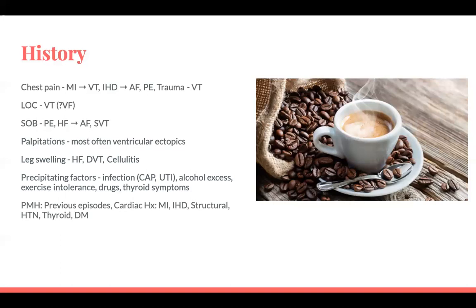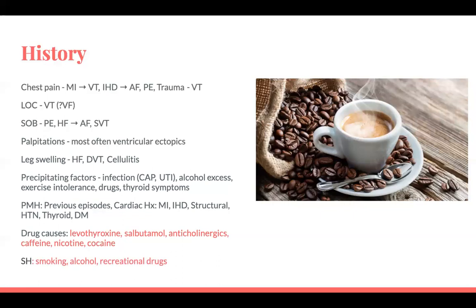Past medical history: ask about previous episodes of palpitations or chest pain. Look at their cardiac history — a previous or recent MI would be particularly in keeping with ventricular tachycardia. Ischaemic heart disease increases the risk of AF; structural valvular problems, hypertension, hyperthyroid, and diabetes are also relevant. Drugs that cause sinus tachycardia — many patients will be on these, so review medications: levothyroxine, salbutamol, anticholinergics like atropine, ipratropium, tolterodine, caffeine, nicotine, cocaine. Ask about recreational drug use, smoking, and alcohol.